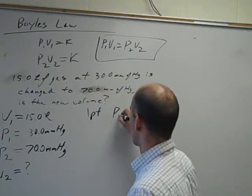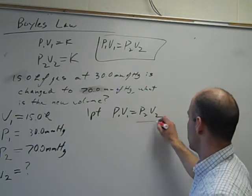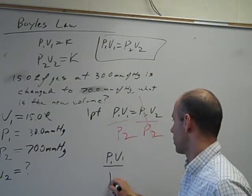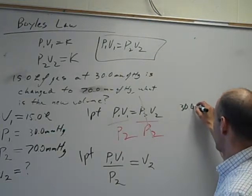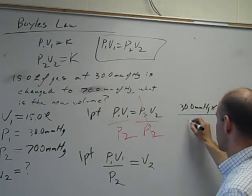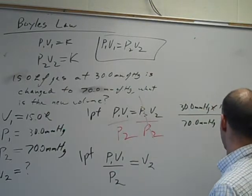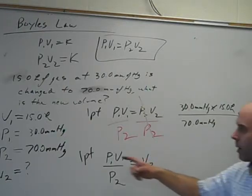So that's one point for writing down the info. One point for writing down the correct equation. One point for doing the algebra. So to solve for V2, we're going to divide by P2.